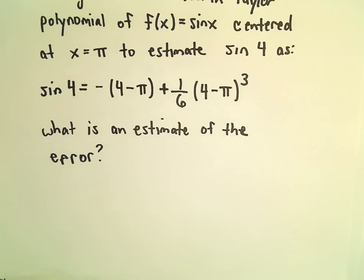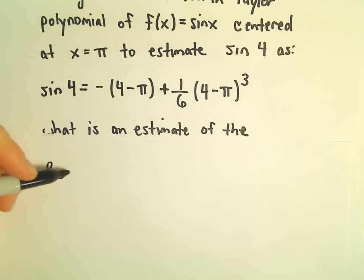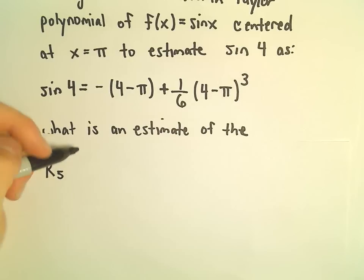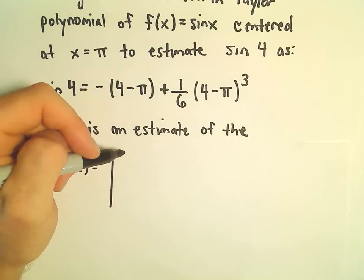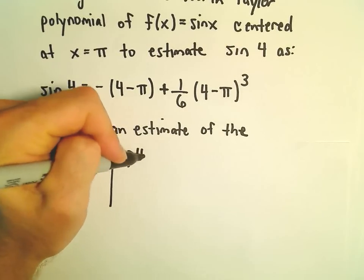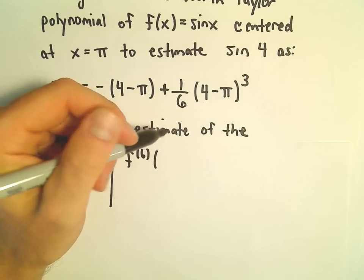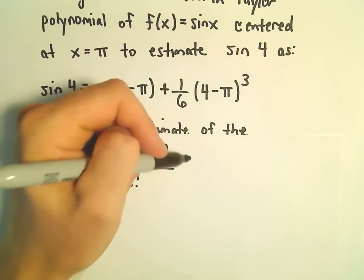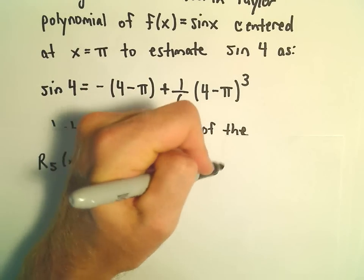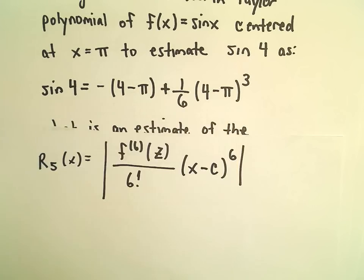So let's set up our expression here. We're using a fourth Taylor polynomial, so we've got to look at r sub 5. So r sub 5 of x, we've got to take the sixth derivative of our function evaluated at z over 6 factorial, and then we would have x minus c raised to the sixth power.